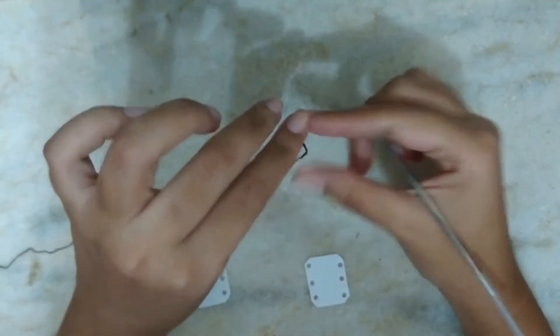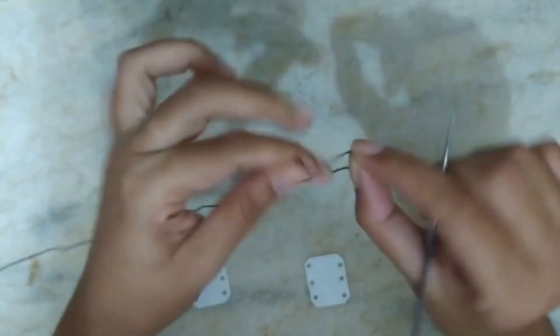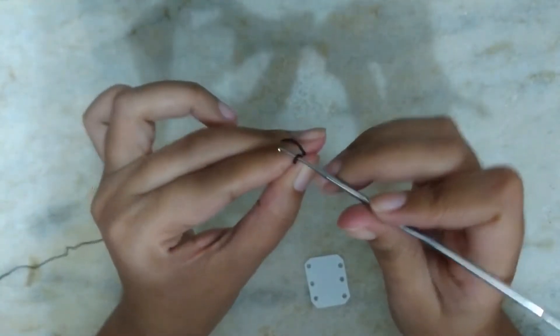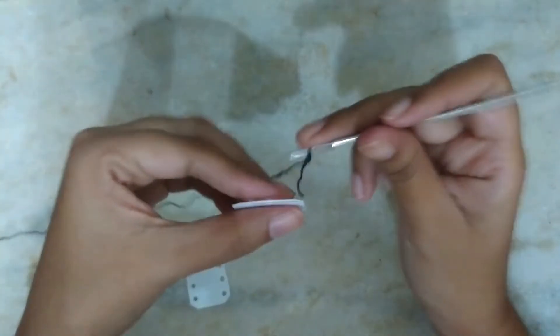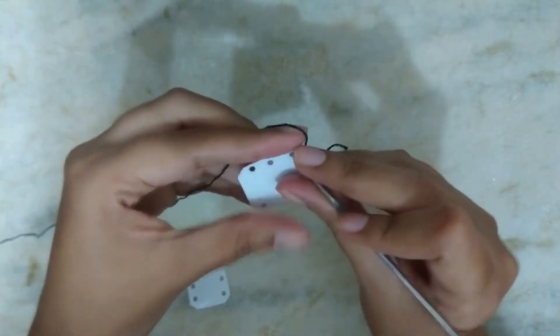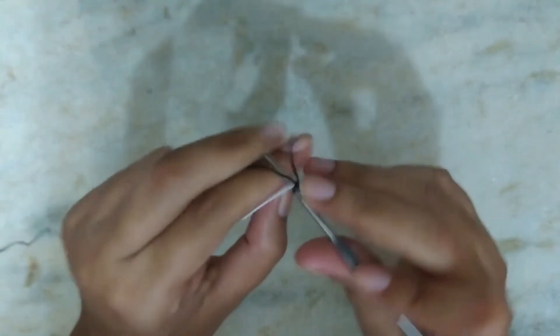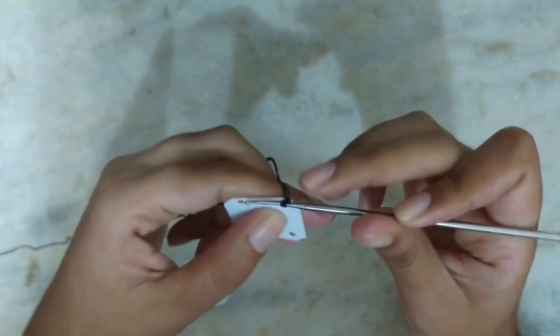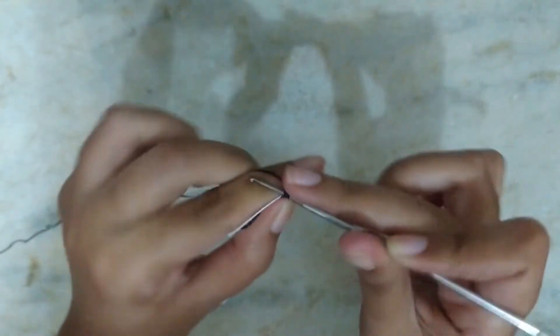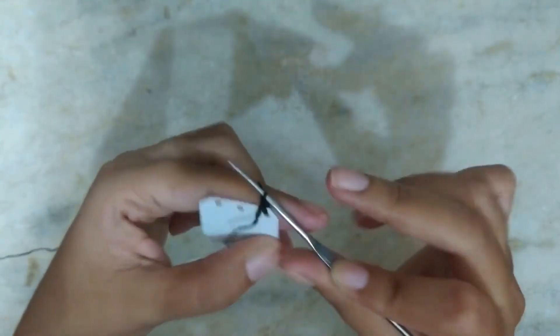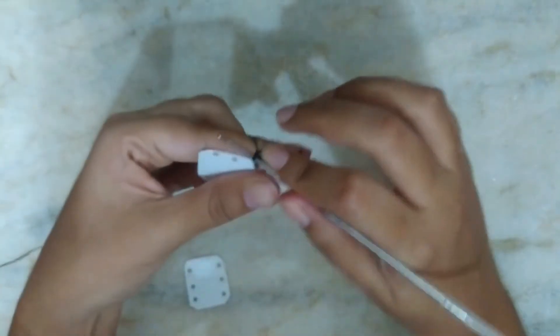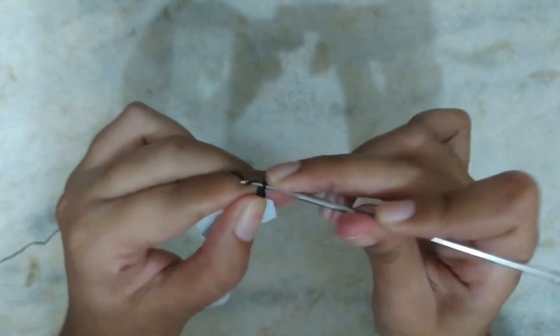To start the bracelet, I make a loop. I come to this part here and make a low stitch. And now I make eight chain stitches.